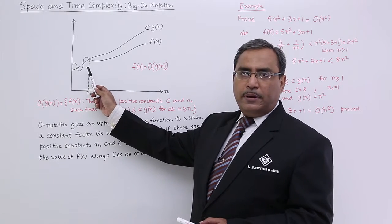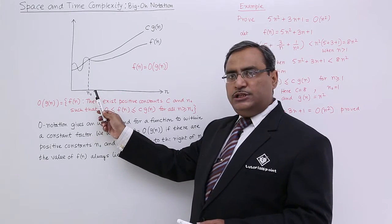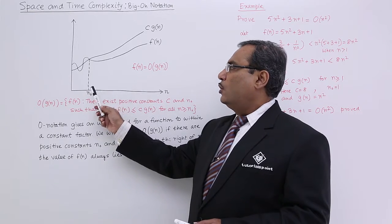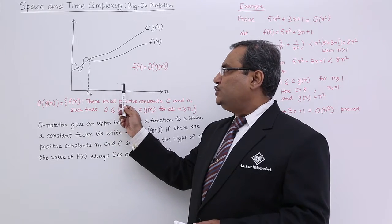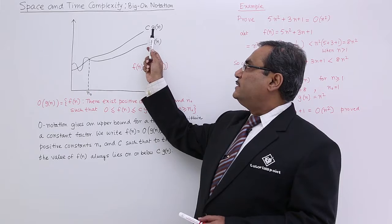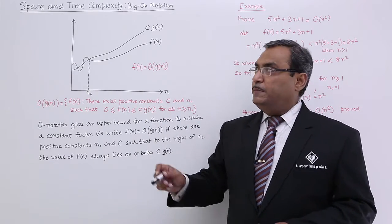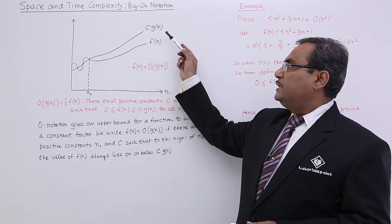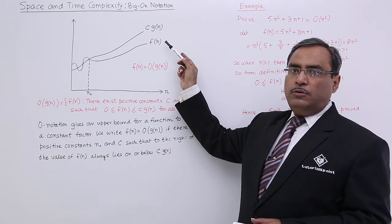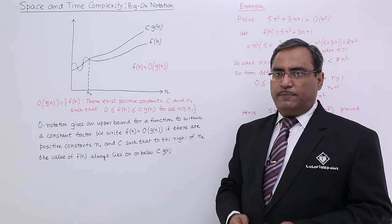Anything can happen before n₀, but when the value of n is n₀ and upwards — greater than n₀ — f(n) is always less than or equal to c·g(n). That means c·g(n) denotes the upper bound of this particular function f(n).